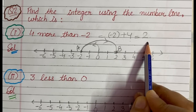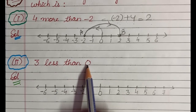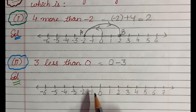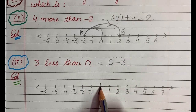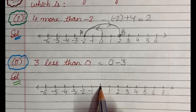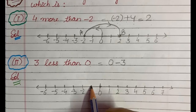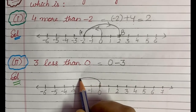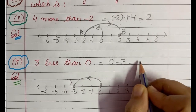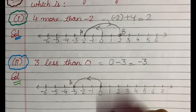In the second part, 3 less than 0 means 0 minus 3. We start from 0 and move 3 steps to the left, since we are subtracting 3. We stop at minus 3. So 0 minus 3 gives us minus 3 as the answer. Hopefully, this is also clear to you.